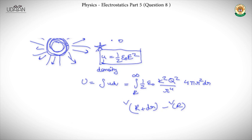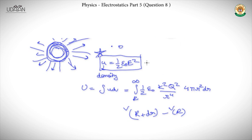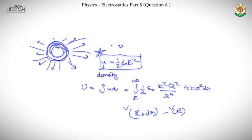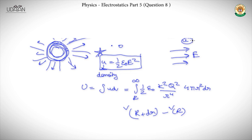There is another easier way to approach this. The self-potential energy of this shell is stored in the electric field. There is a formula for energy density: small u equals half epsilon-naught times E squared. When there is an electric field in a space, there is energy associated with that space, and the energy density is given by this formula.